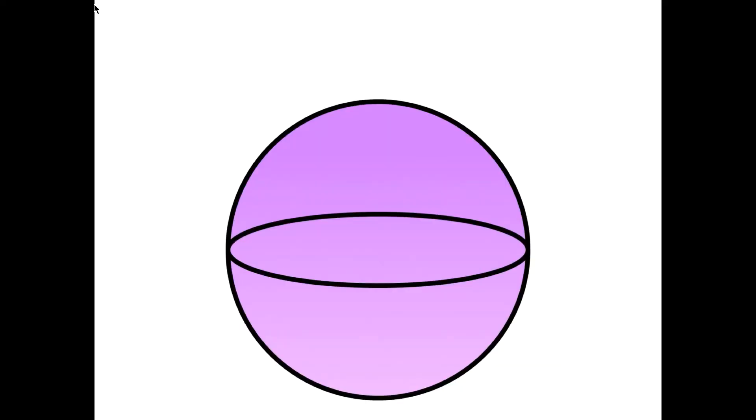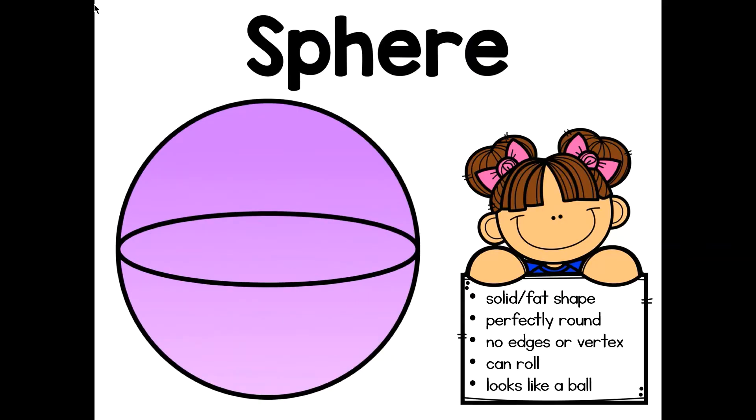What is this 3D shape? You guessed it! A sphere! This shape has no edges and no vertices, but it can roll. This shape might resemble a bouncy ball or a globe in real life.